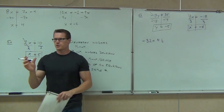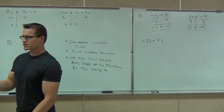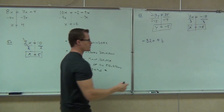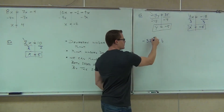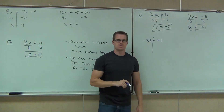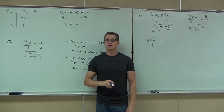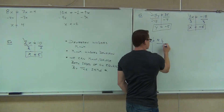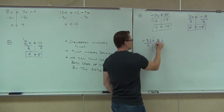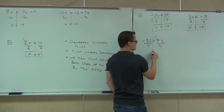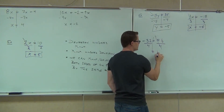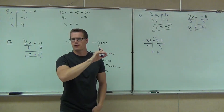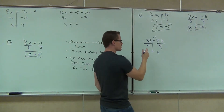Does it still work if I put the variable on the other side of the equation? Yes. So on our problem here, are we still going to divide? What are we going to divide by? 4. If we divide both sides by 4, it doesn't really matter where the variable is — we can still create that 1. Negative 32 divided by 4 is negative 8.